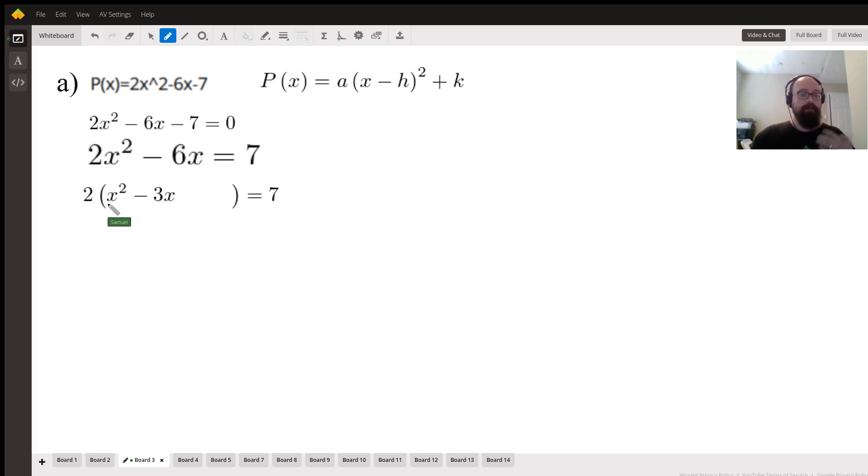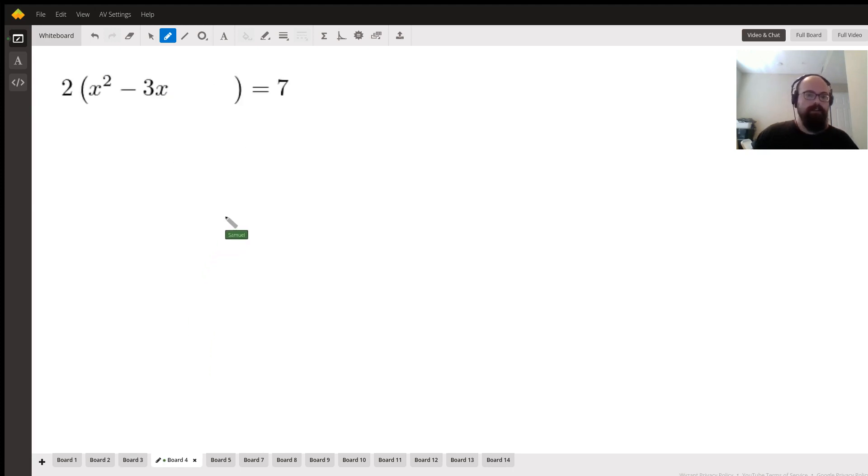And then after that, we're going to be factoring out the coefficient of the x² term from the left-hand side. So this is going to leave us with 2(x² - 3x) and there's a blank, equals 7. What this means is that all we have to do is just take this term, which in this case is -3, we divide it by 2, and then we square it.